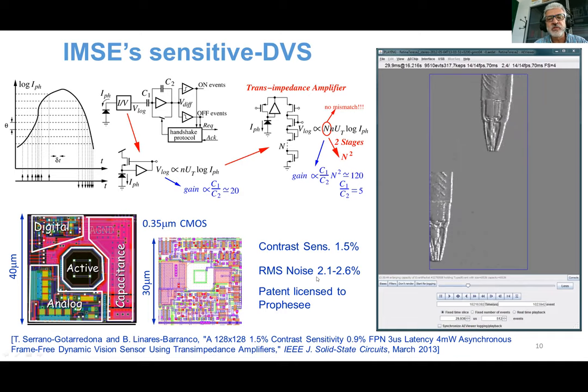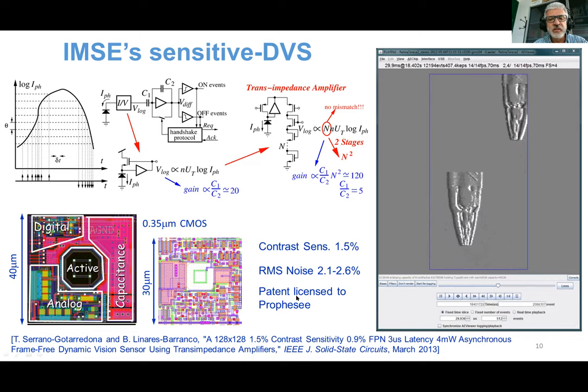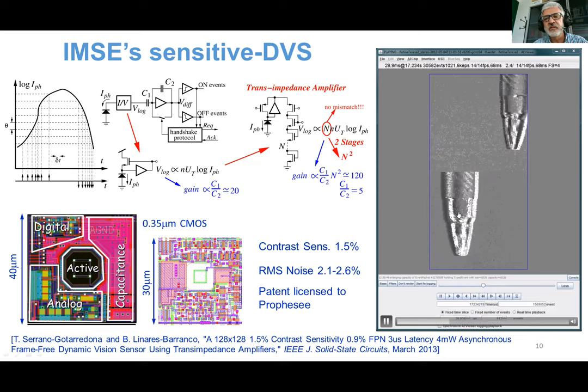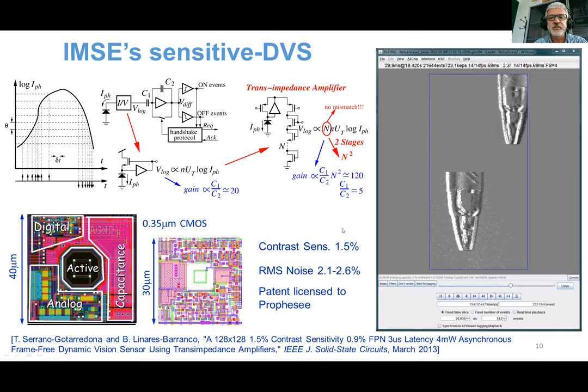Although the noise was slightly larger at 2.1 to 2.6 RMS equivalent, we patented this idea and it was licensed to Prophesee. Thanks to this patent, Prophesee allowed us to become co-founders of their company. Two recordings of two retinas in a stereo setup show that the contrast sensitivity is actually very nice.